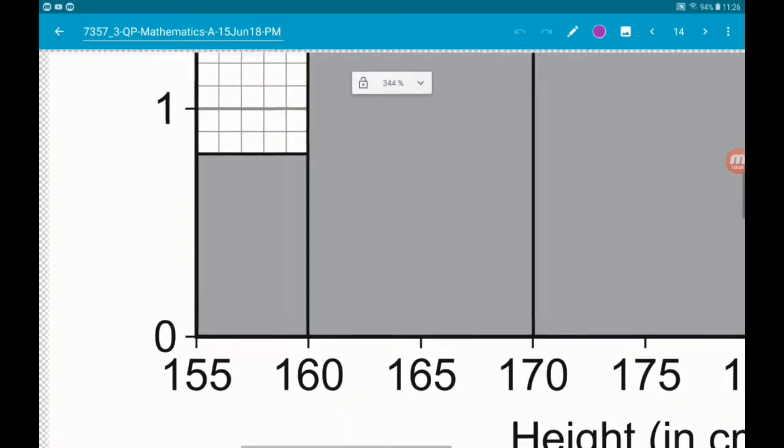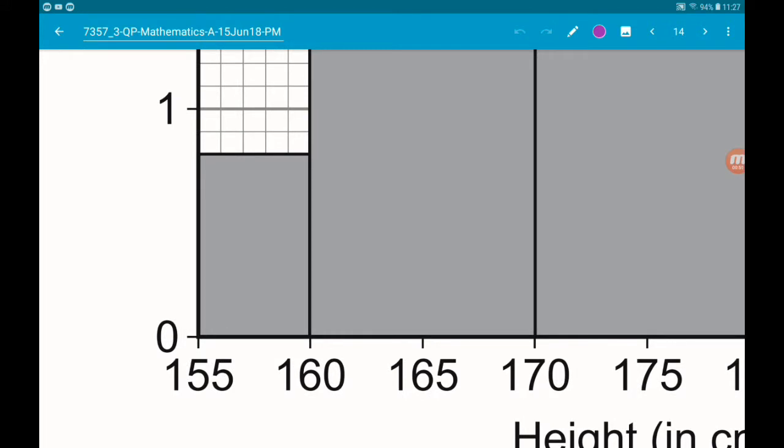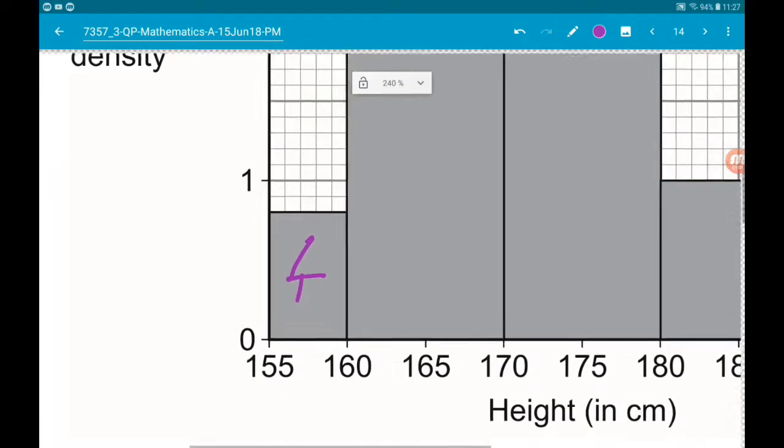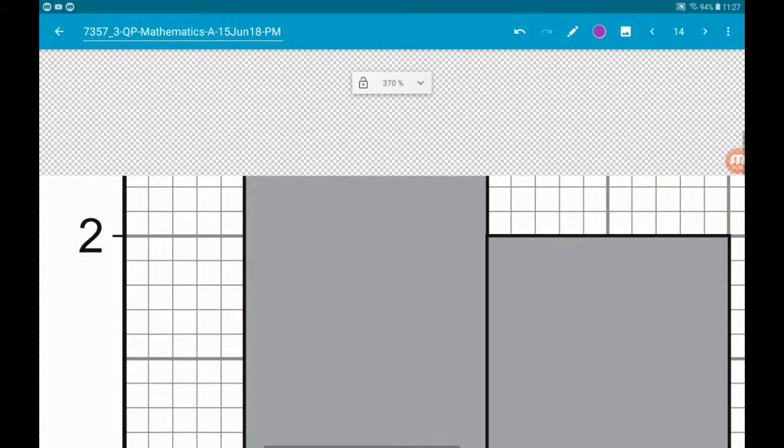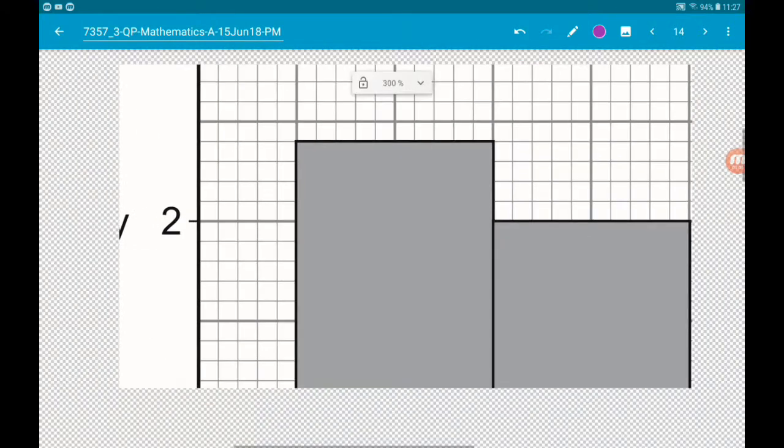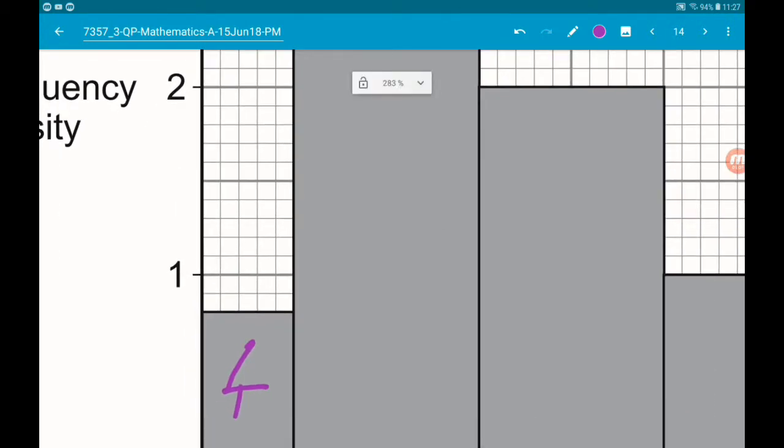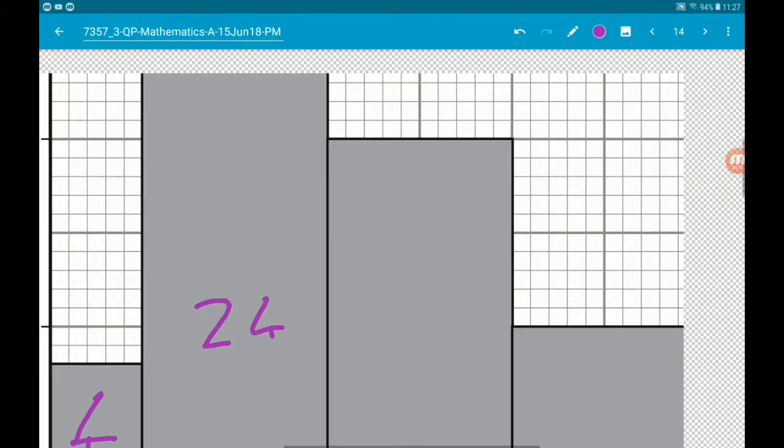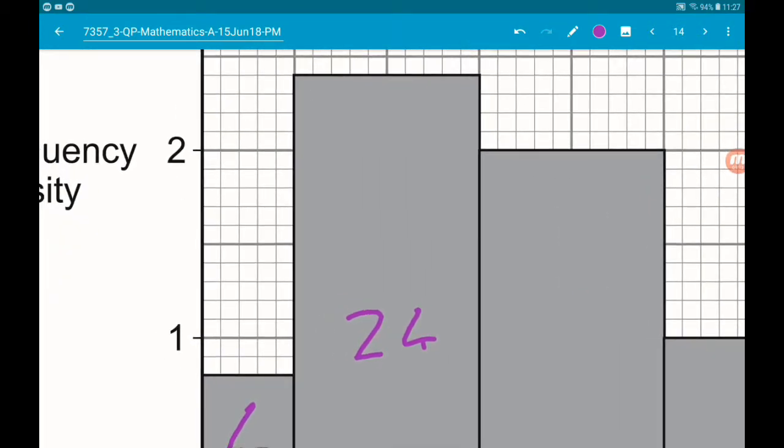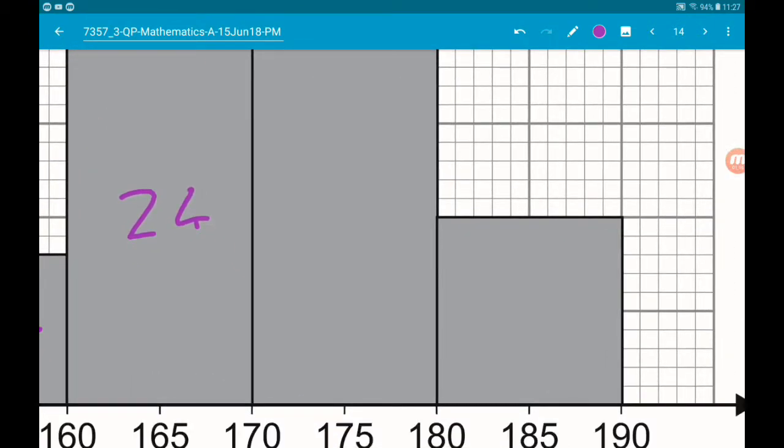So for this first bar, our width is 5 and our height is 0.8, so that's 4 in there. The next one is 10 wide with a density of 2.4, so there's 24 in there. The next is 10 wide with a density of 2, so there's 20 in there.